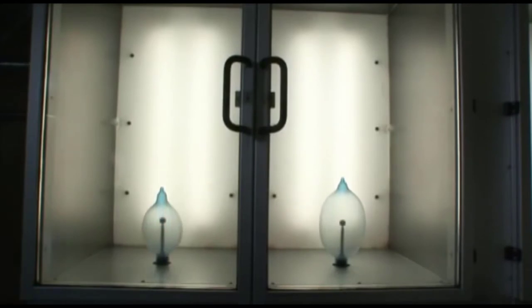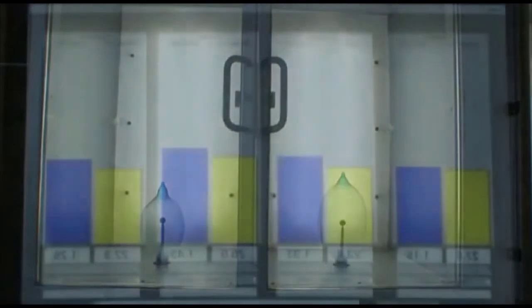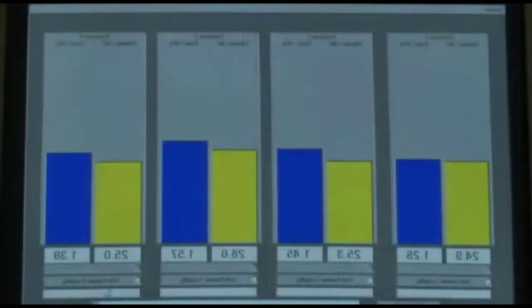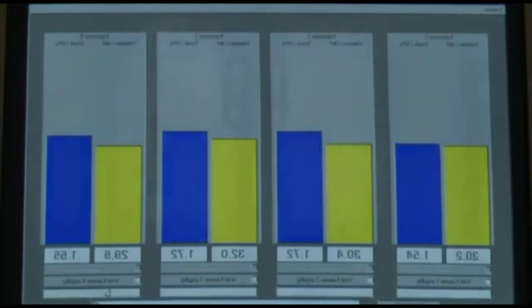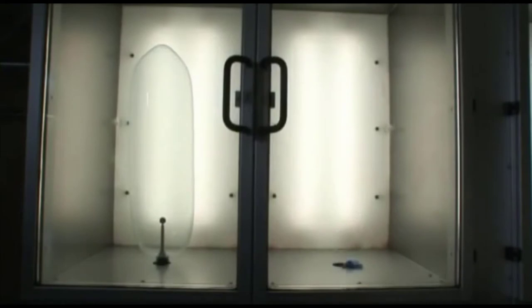Thus, the international standard ISO 4074, for instance, requires that spot checks are made ensuring that the bursting volume of a condom, after an artificial aging process, respectively until the actual expiration date, must amount to at least 18 litres. All MAPA-quality condoms exceed this threshold by far.